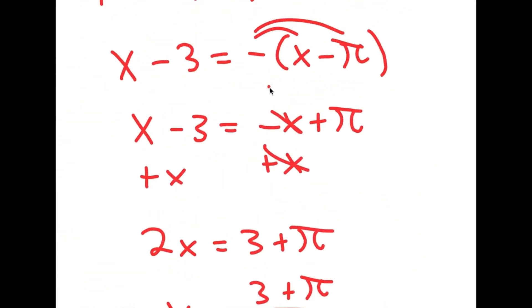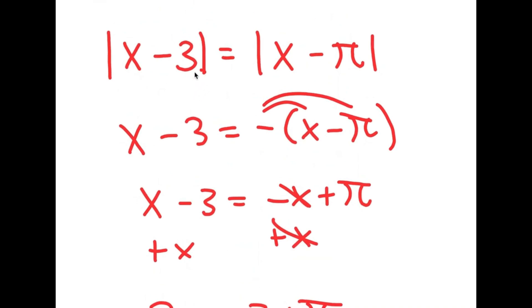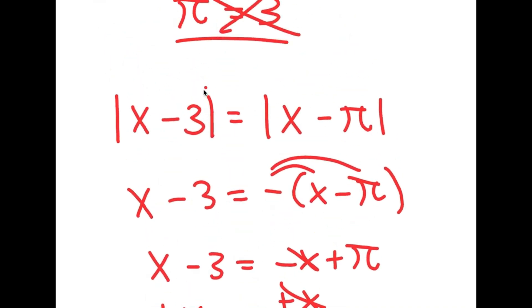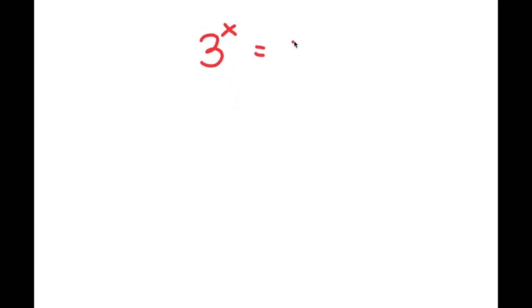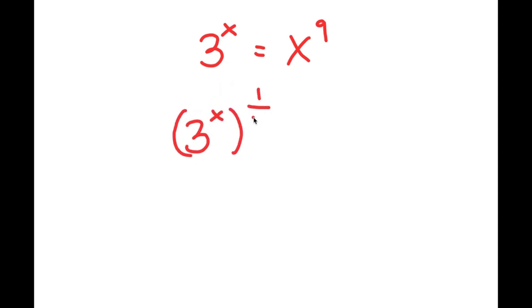So there you have it. That is something really important to know: the square root of a square isn't just the normal version — it's the absolute value of that. So in this next equation, I'm going to be solving 3 to the power of x is equal to x to the power of 9. To solve this, what I'm first going to do is take the power of 1 over 9x on both sides. So I get 3 to the power of x, to the power of 1 over 9x, is equal to x to the power of 9, to the power of 1 over 9x.